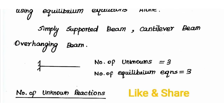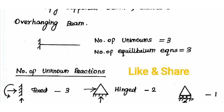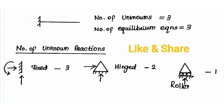Let's take a cantilever beam as an example. For a cantilever beam, there are 3 unknowns at the fixed end. Number of unknown reactions: fixed end = 3, hinge end = 2, roller end = 1. The number of equilibrium equations is: summation of horizontal forces = 0, summation of vertical forces = 0, summation of moments = 0 — that is, 3 equilibrium equations.